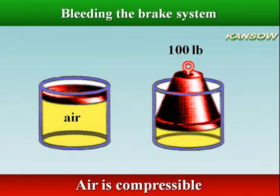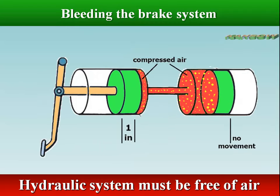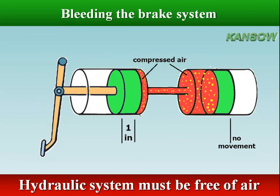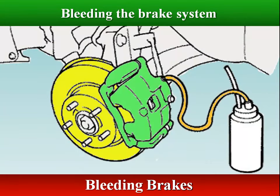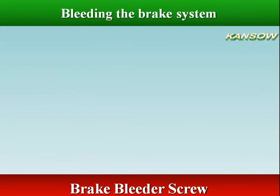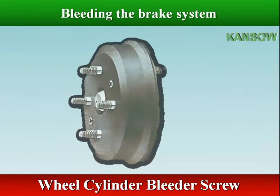Gases are compressible; pressure applied to air changes its volume and some pressure is lost. A hydraulic system must be free of air to operate properly. If air is in the system, the air is compressed when the brake pedal is depressed, and the brake fluid does not transmit the force to the wheel brakes. Bleeding brakes is the process of removing air bubbles from the brake system. Each caliper or wheel cylinder is provided with a bleeder screw located behind it for bleeding brakes.